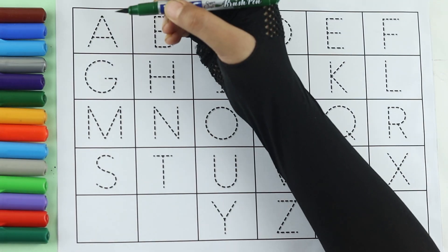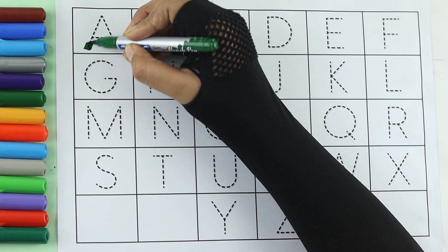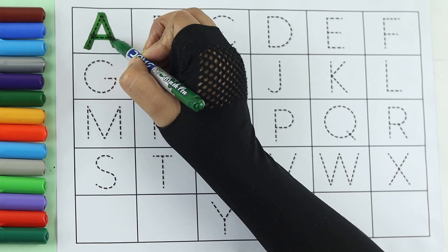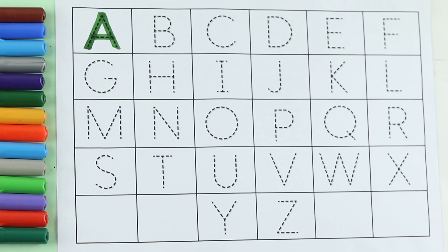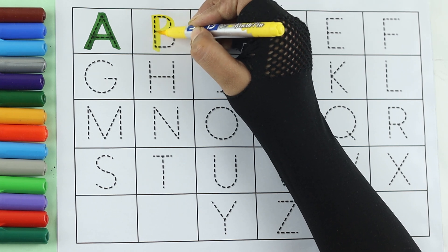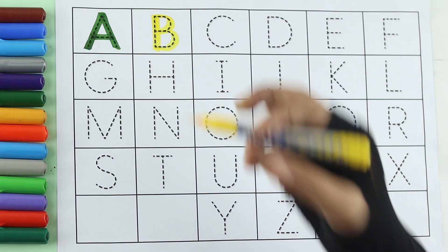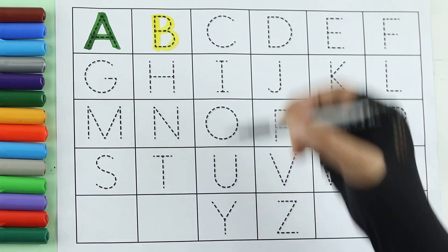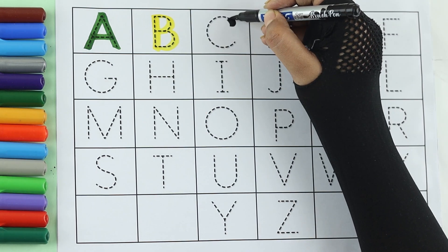Green color. A. A for apple. Yellow color. B. B for ball. Black color.